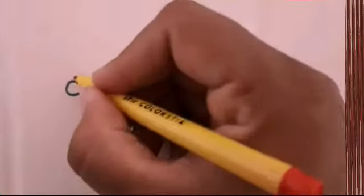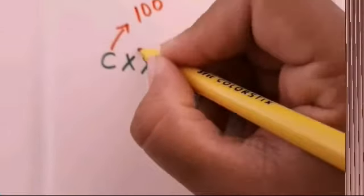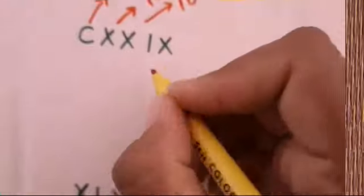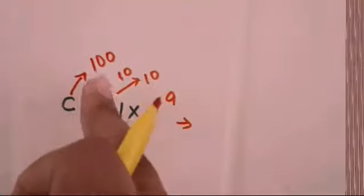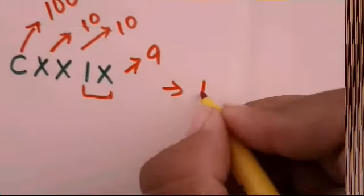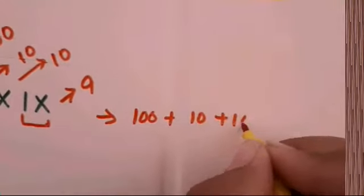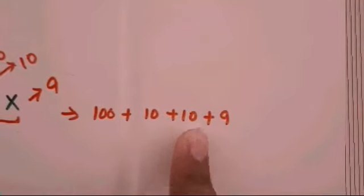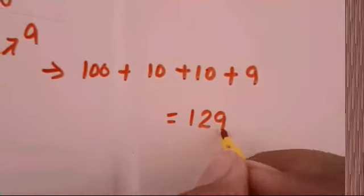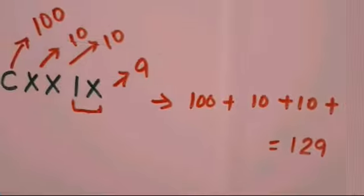Now let's convert a Roman numeral back to a number. C represents 100, X means 10, another X means 10, and IX means 9. So the representation breaks down as 100 plus 10 plus 10 plus 9, which is 129. So this Roman numeral represents 129.